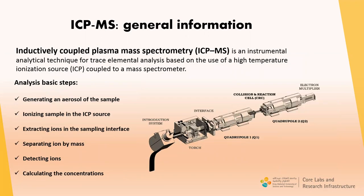Inductively coupled plasma mass spectrometry is an instrumental analytical technique for trace elemental analysis based on the use of a high-temperature ionization source coupled to a mass spectrometer. To carry out elemental analysis using ICP-MS, it is necessary to perform the following steps: generate an aerosol of the sample using a nebulizer, ionize the sample in the inductively coupled plasma, extract ions at the interface, separate ions by mass filter, detect ions by electron multiplier, and finally calculate the concentrations using calibration curves.